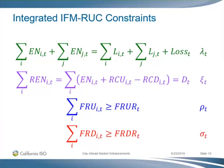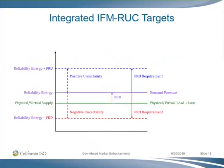It's the same as the ancillary services markets — you have different bids for non-spin and spin because the response obligations are different. But if you look at reliability capacity and flexible ramping-up capacity, they essentially have the same obligation: to make bids available to the real-time market to cover both your RCU and your FRU. The cost of being available for re-dispatch is the same between the two, whether you're doing RCU or FRU.